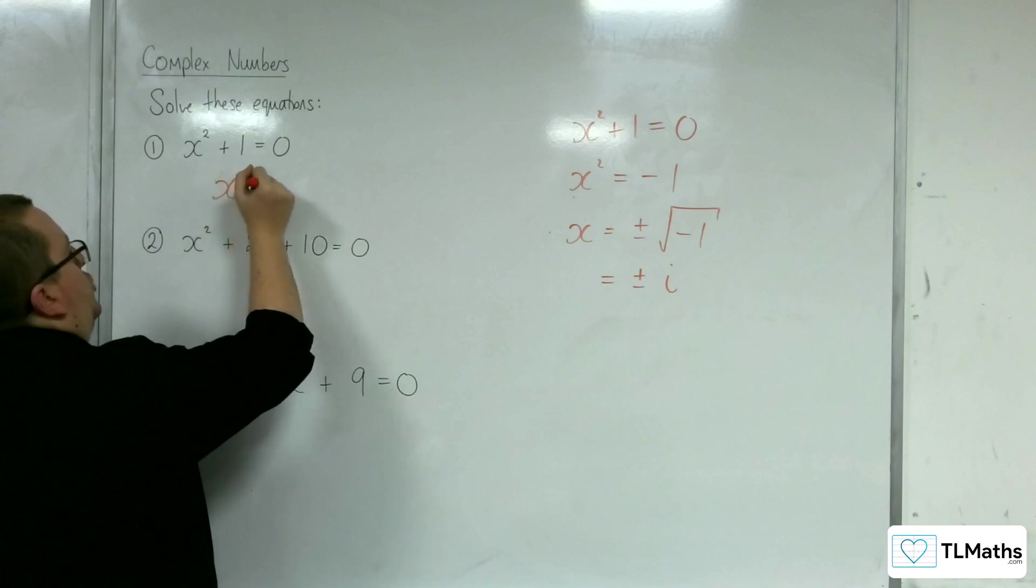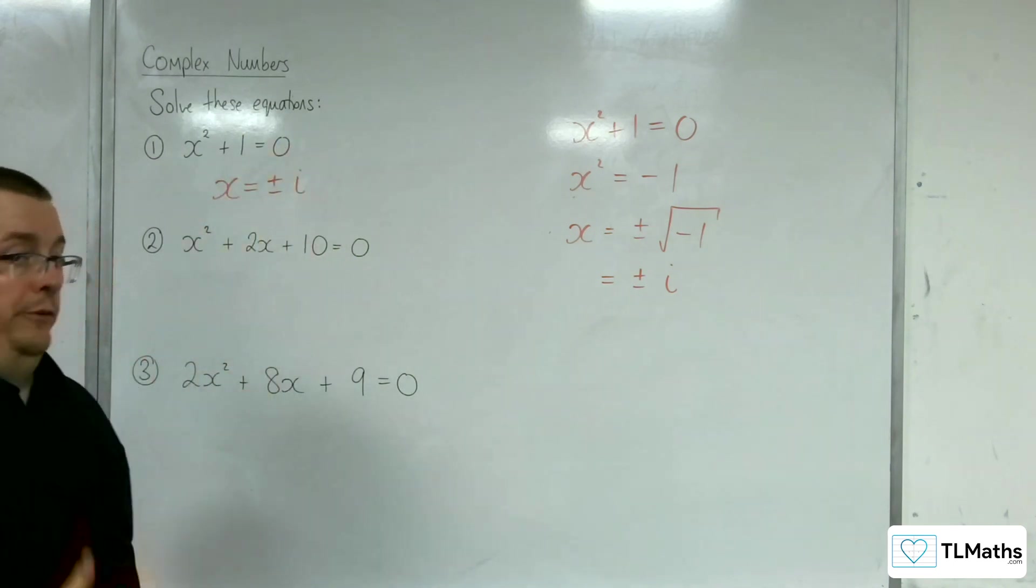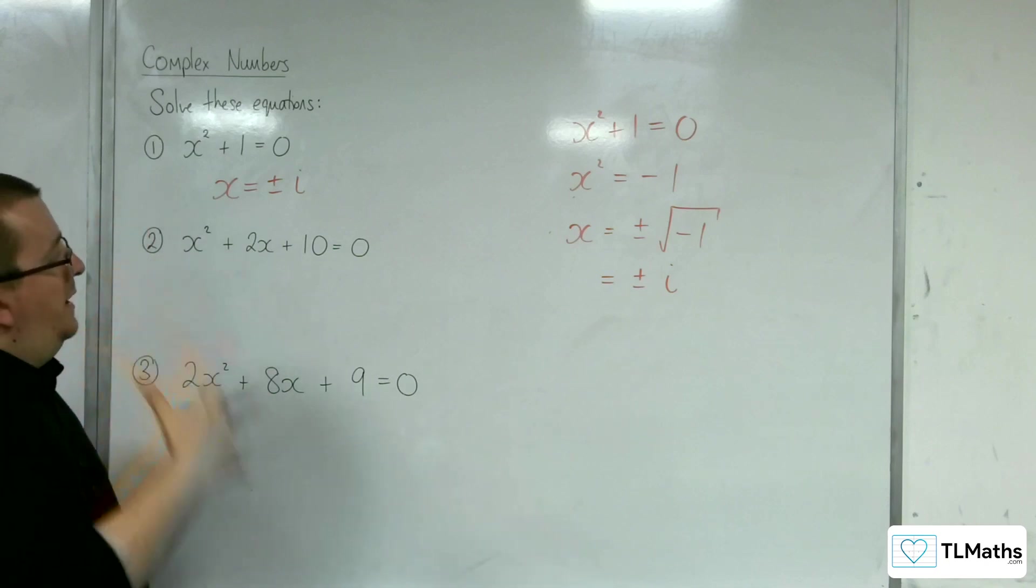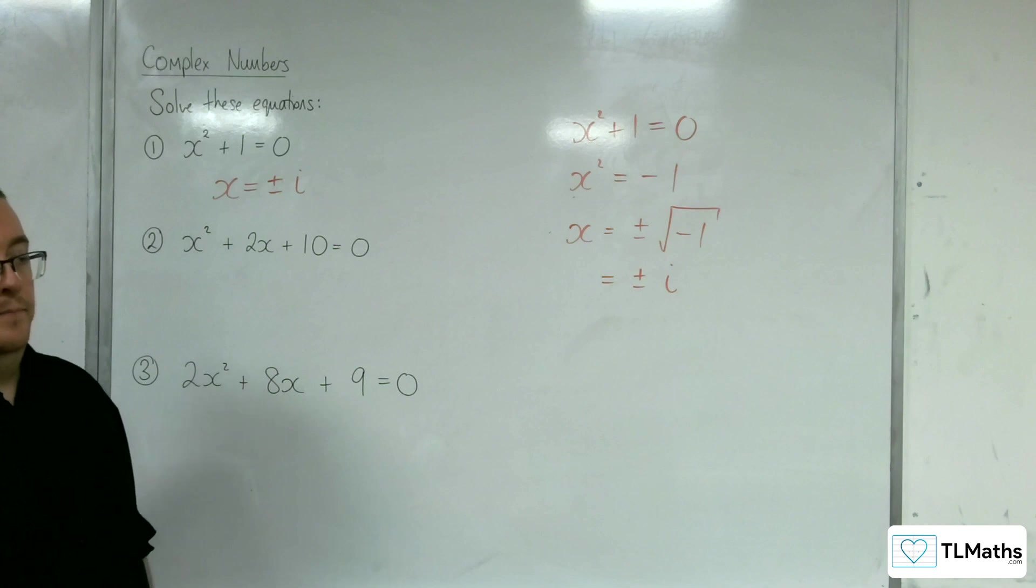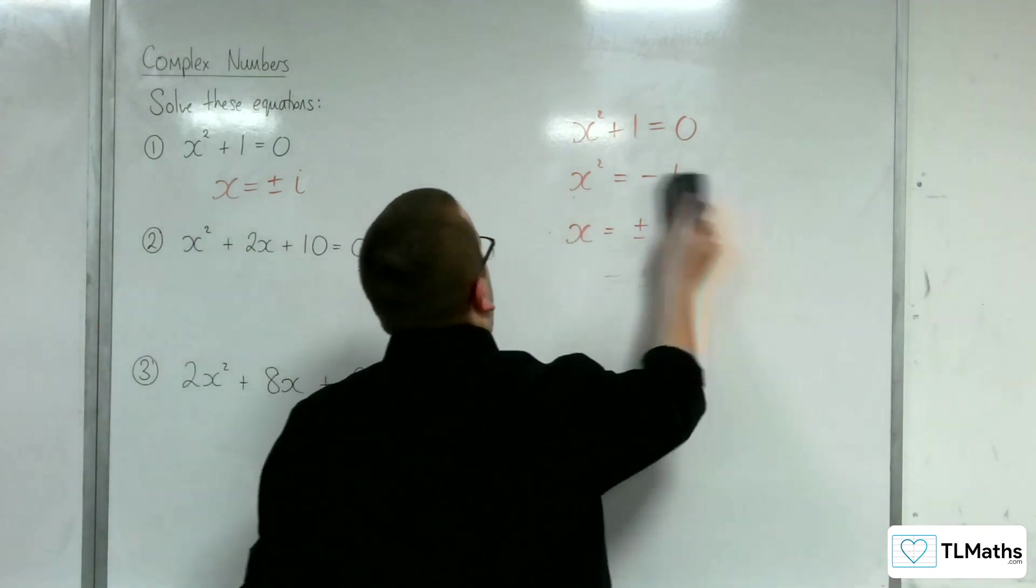So, the complex solutions to this equation. It has no real solutions. It has two complex solutions, plus i and minus i. And so, that is the first one.